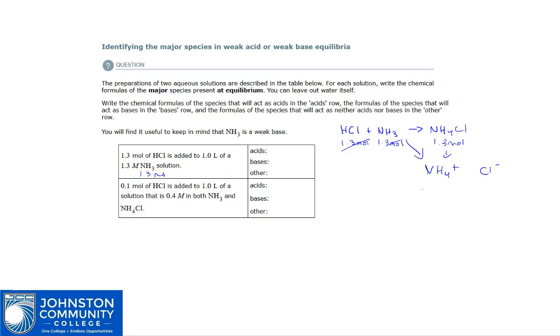Ammonium is the conjugate acid of ammonia, so this is going to be able to act as an acid. Chloride, while it is technically the conjugate base of HCl, HCl is a strong acid. But strong acids, because they go to completion, their conjugates cannot act as bases. They cannot go backwards.